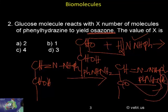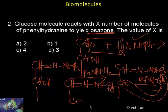Now what will happen? This O and this NH2 undergo condensation to produce CH double bond N, NH, C6H5, then C double bond N, NH, C6H5, and remaining four carbon atoms identical.